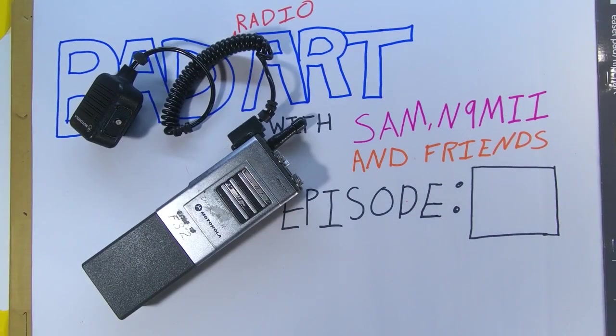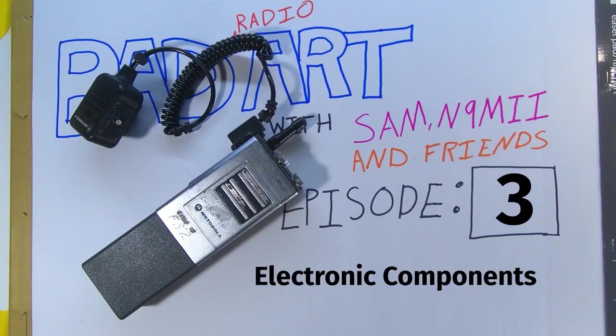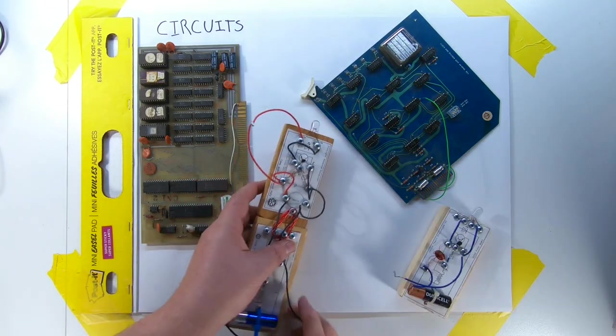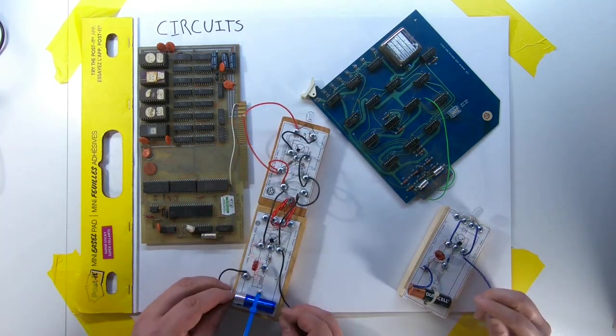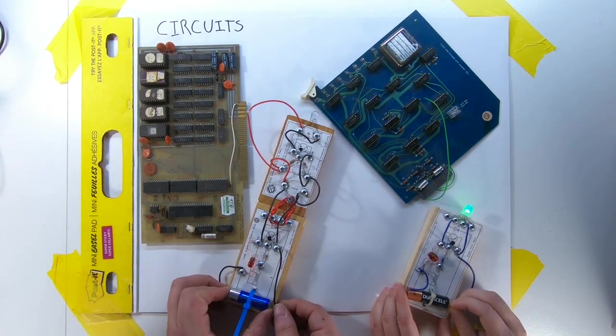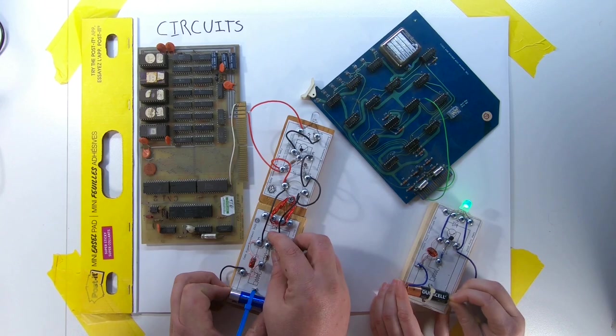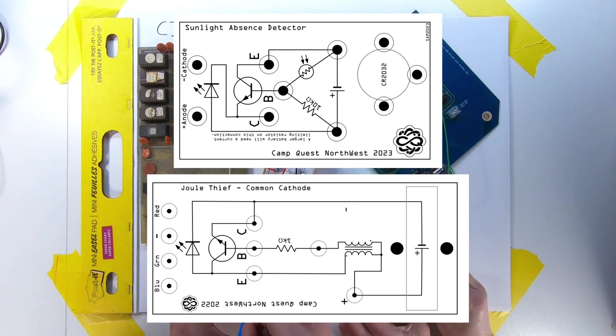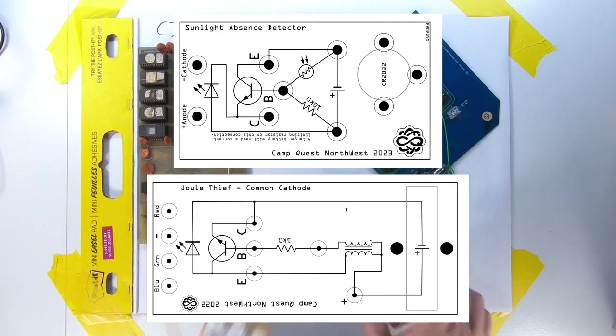Today we're talking about components. I'm going to lean pretty heavily on the circuits we've built at camp over the last couple years. On those circuits we had to attach things to a block of wood. Those things are the components we're going to be talking about today. The symbols on top of the wood were a diagram of how the circuit was put together. We call these diagrams schematics. I'll be referring to the schematics of our jewel thieves and sunlight absence detectors when appropriate throughout this video.